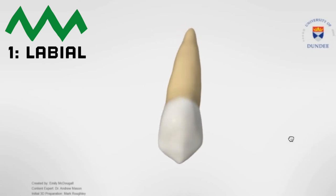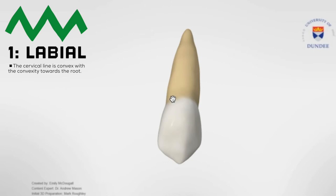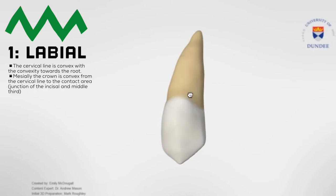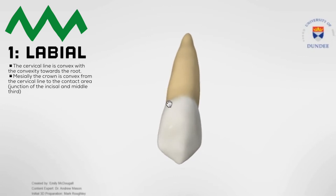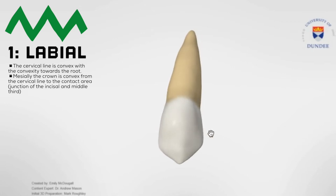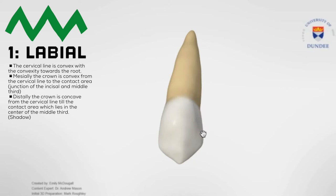Number one is the labial viewing aspect of the tooth. This view considers the surface of the tooth facing the lips. The cervical line is convex with the convexity facing towards the root. Mesially, the crown is convex from the cervical line to the contact area, and the contact area is at the junction of the incisal and middle third. Distally, the crown is concave, and that concavity runs from the cervical line to the contact area, which lies in the center of the middle third.